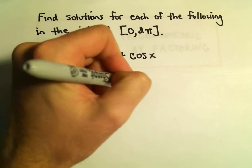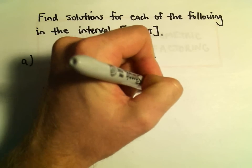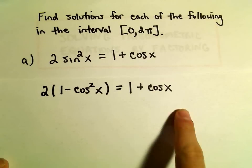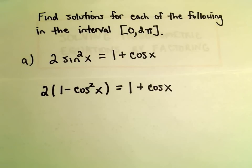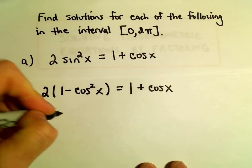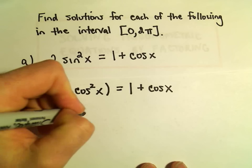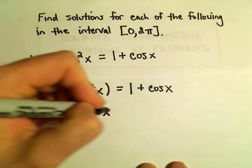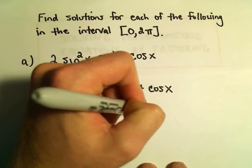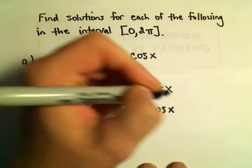I'm just going to basically try to turn this problem into, I just want everything to involve cosines. So I'm going to distribute the 2, so 2 times 1 will be 2, we'll get -2cos²x = 1 + cos x.